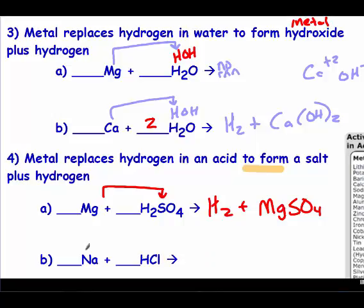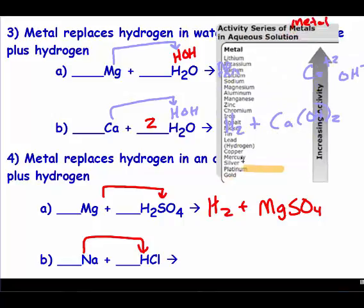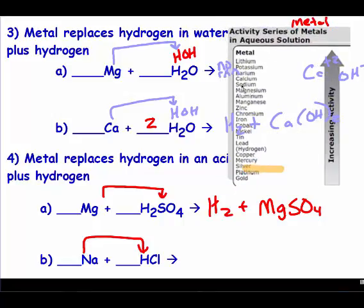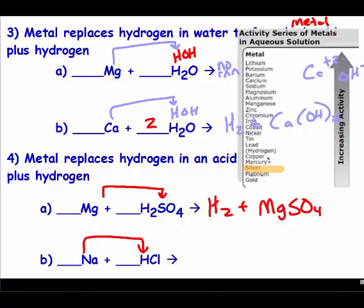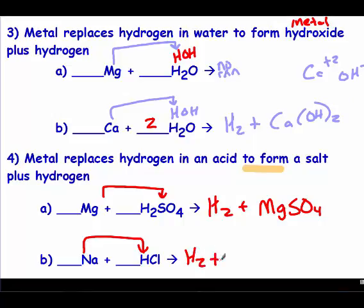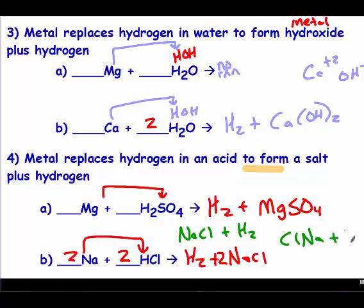For the bottom one, sodium is trying to kick out hydrogen. We look at the list — hydrogen is down there and sodium is way up, so sodium can kick out hydrogen in an acid as well as water. Hydrogen gets kicked to the curb and sodium combines with chlorine: sodium is a plus one and chlorine is a minus one, so it's just NaCl. Balancing: we have two hydrogens so we need a two, that gives two chlorines, so a two there and a two for sodium. The order with the plus sign doesn't matter, but the positive ion always goes first — it must be NaCl, not ClNa.